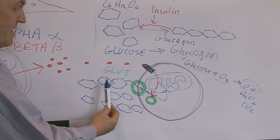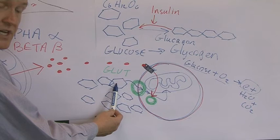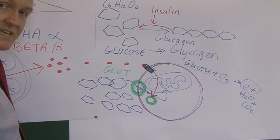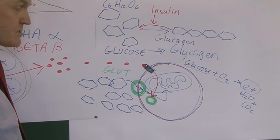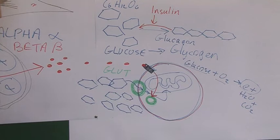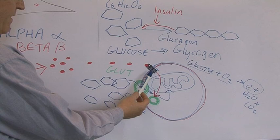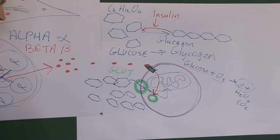Either way, you don't get the glucose transporter molecules going to the surface, therefore you get a hyperglycemia. In type 2 diabetes the diagnostic criteria are the same: greater than 7 millimoles of glucose in a fasting sample, more than 11.1 millimoles of glucose in a random sample. So type 1: destruction of the beta cells; type 2: loss of the insulin receptors.